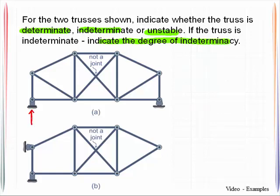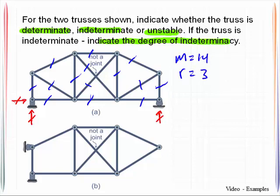We will start by identifying where the reactions are located, and then we will count up the number of members that we have. 1, 2, 3, 4, 5, 6, 7, 8, 9, 10, 11, 12, 13, 14. Go ahead and write that here. Number of members is 14. Number of reactions that we have is 3.